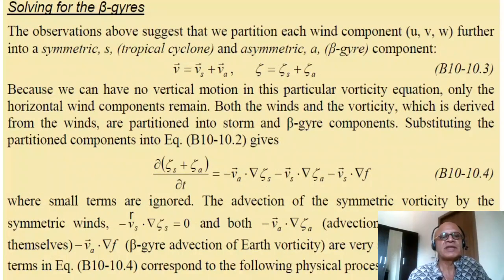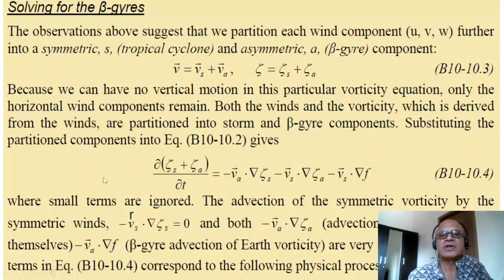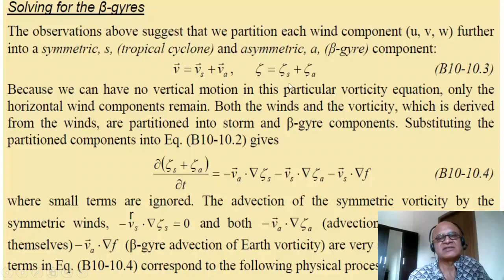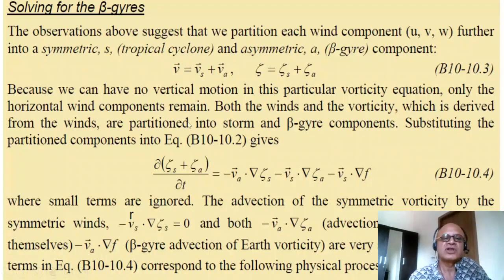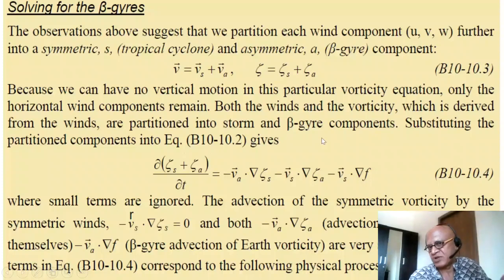Solving for beta gyres, observations suggest we partition each wind component into a symmetric tropical cyclone contribution and an asymmetric beta gyre contribution. We write the vector wind as V_symmetric plus V_asymmetric, which makes the relative vorticity zeta_symmetric plus zeta_asymmetric. Since there is no vertical motion in this barotropic equation, only horizontal wind components remain. Both winds and the vorticity derived from them are partitioned into storm and beta gyre components.